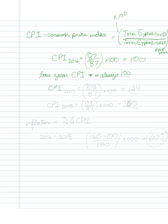Now my CPI number in 2017 is going to equal 108 over 87, again times 100, and that equals 124. My CPI number in 2018 is equal to 139 over 87 times 100.